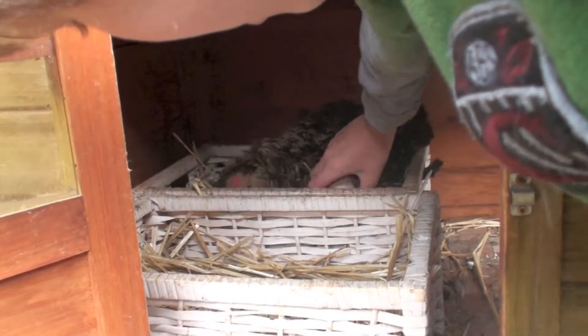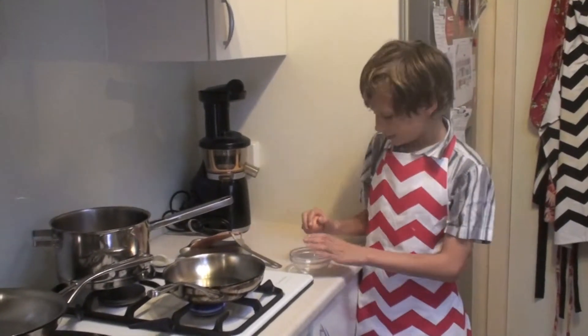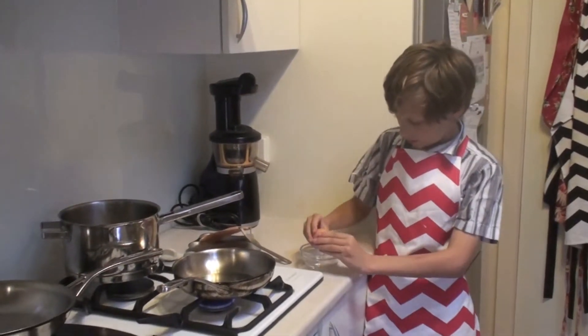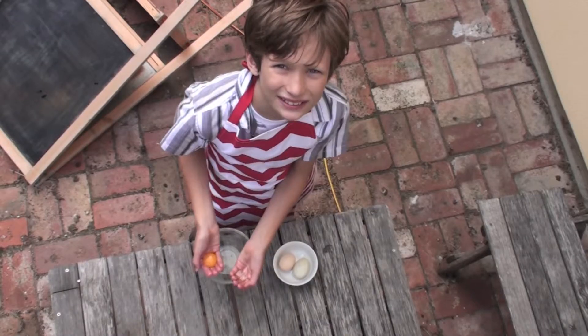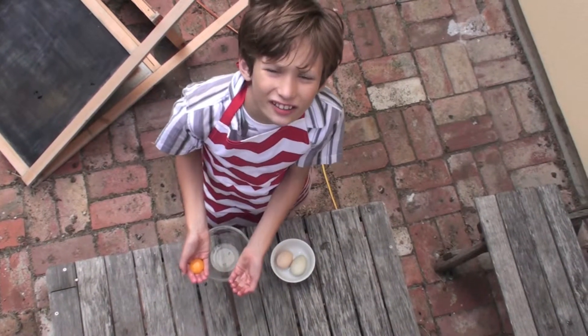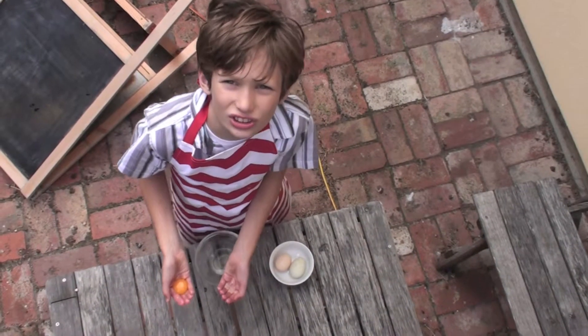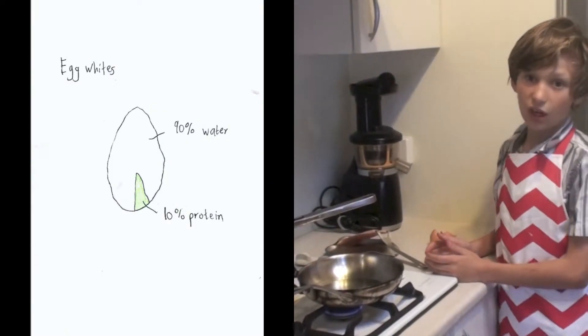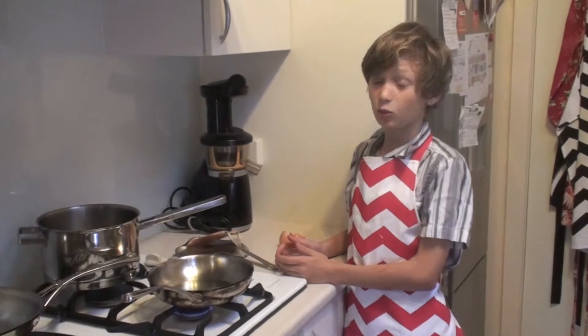Let's start by getting a fresh egg and looking inside. The yellow part is the yolk — the bit that feeds the developing chicken if the egg has been fertilised. The clear part is the egg white, and it protects the yolk and gives extra nutrition to the chicken. Egg whites are made of about 90% water with 10% proteins. Yolks are 50% water, 30% fat, and 20% protein.